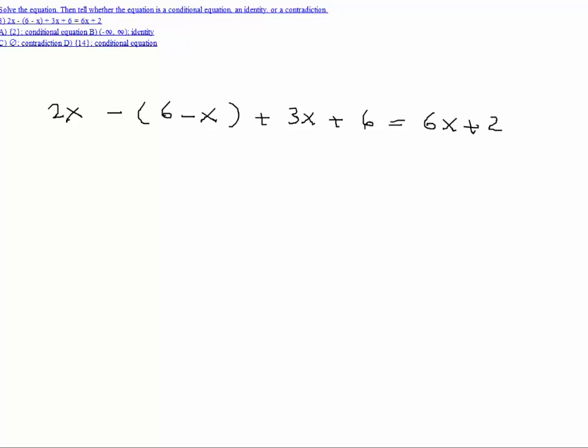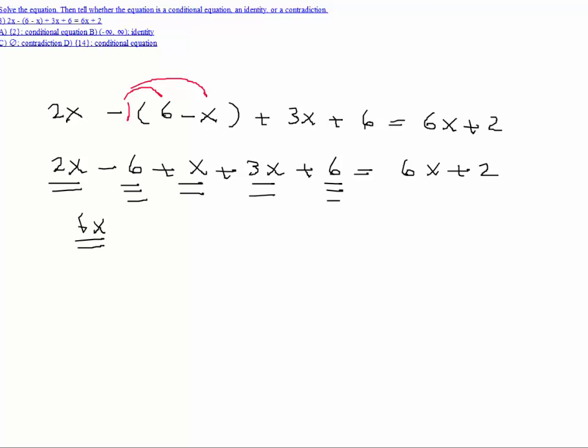Okay, here we distribute. This is like an imaginary one here. Let's just put 1. There's a 1 here that you distribute. So I get 2x minus 6 plus x plus 3x plus 6 is equal to 6x plus 2. If you combine like terms, we have 2x, 1x, 3x. That adds up to 6x. And then here we have minus 6 plus 6. That adds up to 0.